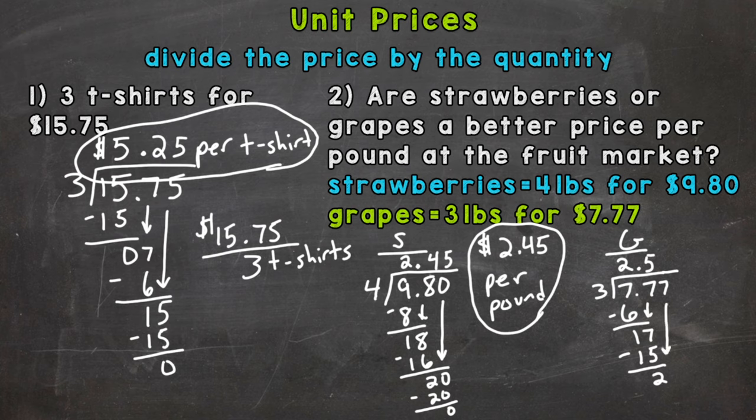Bring down this 7, so 27. 7 divided by 3 is 9, 9 times 3 is 27, subtract and we get our zero. So grapes are $2.59 per pound.